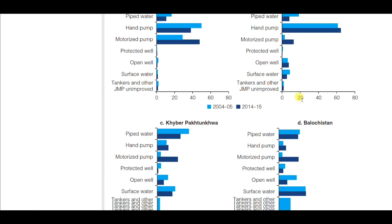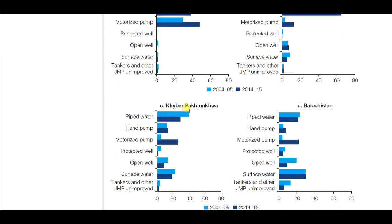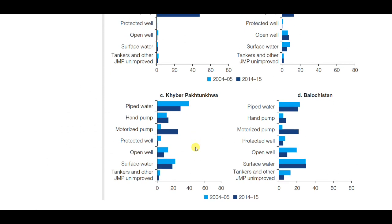Pipe water has decreased in Punjab and also in Balochistan, where most people rely on surface water. In Khyber Pakhtunkhwa, pipe water supply has also decreased and motorized pumps have increased. Sindh still has the highest percentage of people using pipe water. In Balochistan, less than one hour of pipe water supply was much higher — about 50% in 2005-06 — but this has improved and roughly halved by 2013-14.